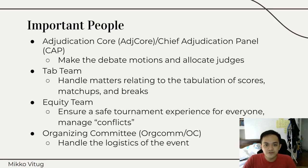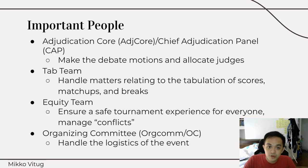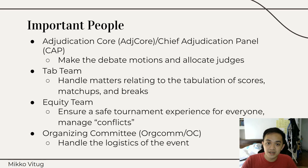A brief overview of important people in a tournament. The first is the adjudication core, the adjcore, or the chief adjudication panel (CAP). They are the people who make debate motions and allocate judges. If you have any concern with either of these two things, you should approach them. Most particularly, if you have clarifications on the motion, you'd want to approach the adjudication core. Note that they aren't obliged to answer all questions, especially if those clarifications could be advantageous to one side or if you should simply know those things.